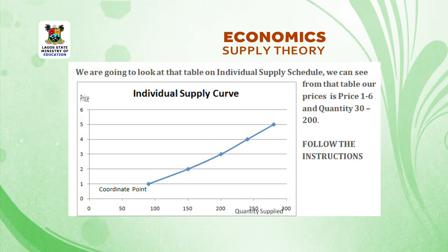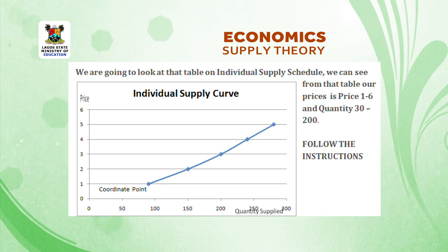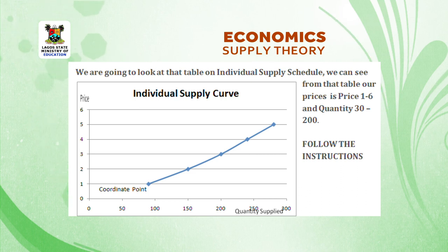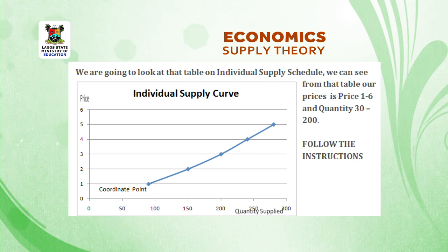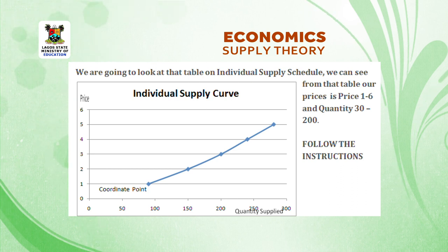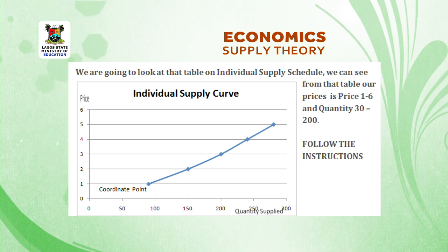Go into your table, study it, and know the appropriate scale you need to use. Use coordinate points to plot your supply curve and label your diagram. Use your arm to trace your coordinate points. We are going to look at the individual supply schedule table.